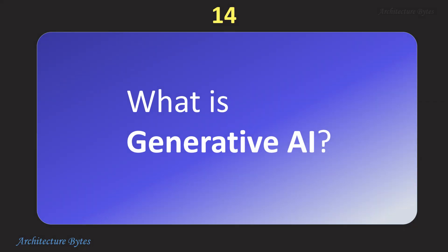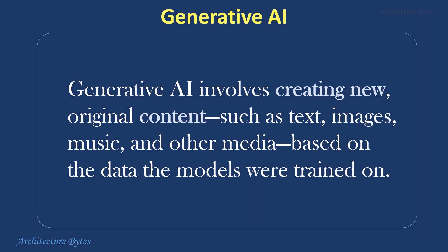What is generative AI? Generative AI involves creating new original content such as text, images, music, and other media based on the data the models were trained on. Examples of generative AI include GPT-4 for text generation and Stable Diffusion for image creation.